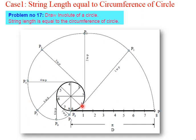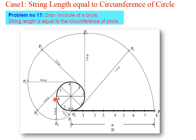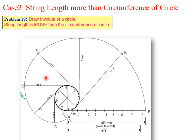Join all points from P to P8 freehand and then fair the curve with a French curve. This is your involute of a circle with string length equal to the circumference of a circle. This type of example is very important from the examination point of view, as it has been asked in Savitribai Phule Pune University end-semester examinations.